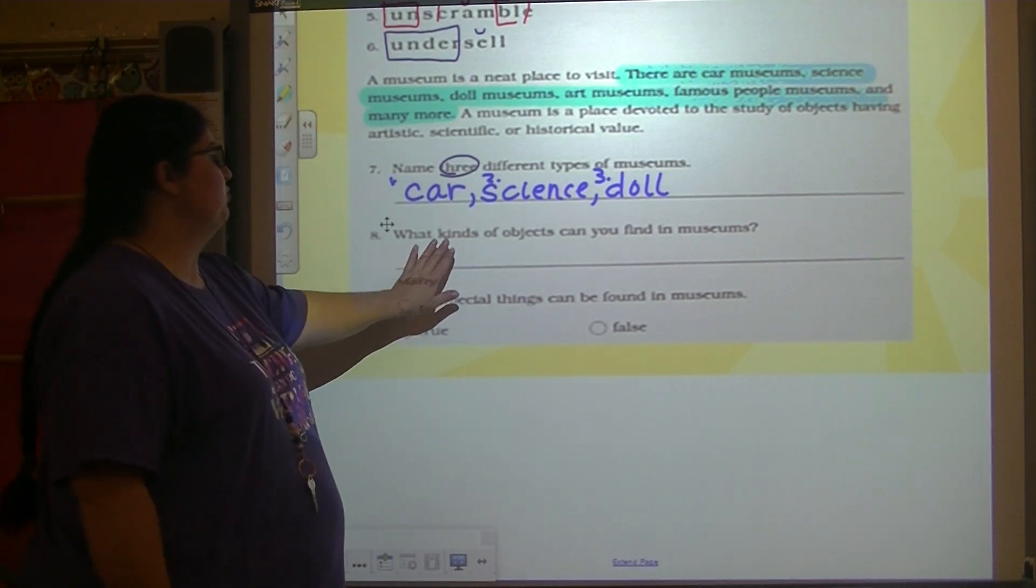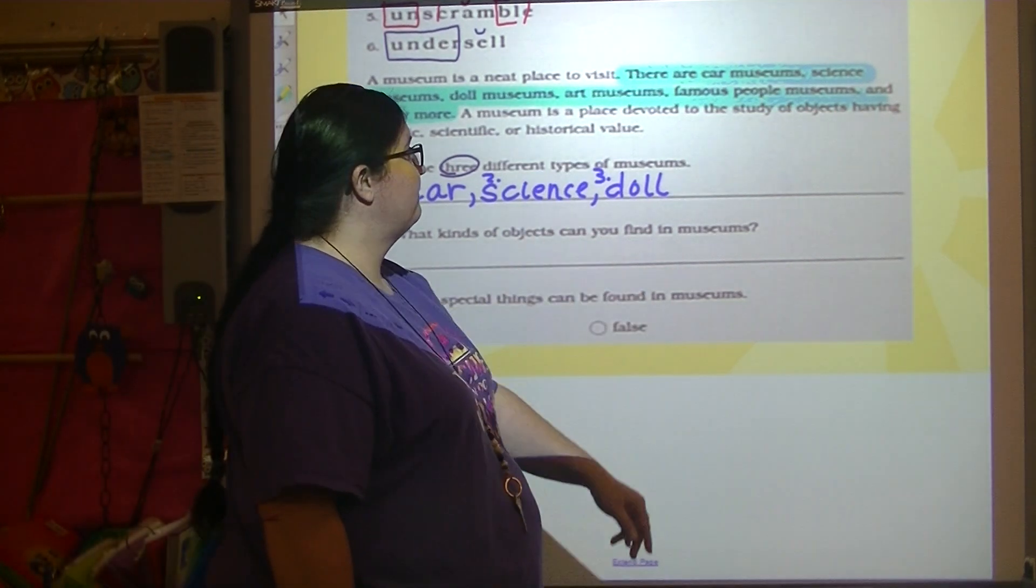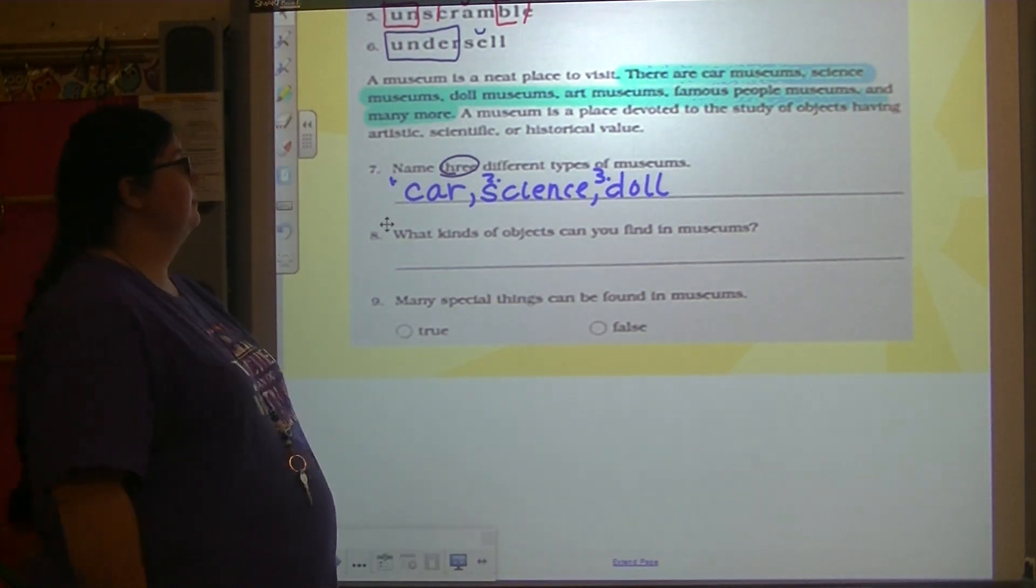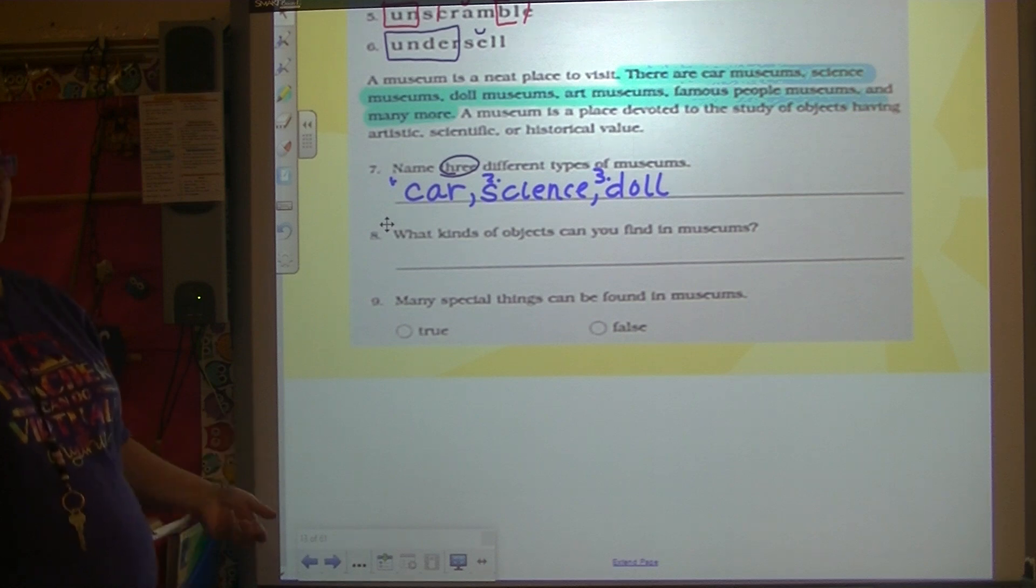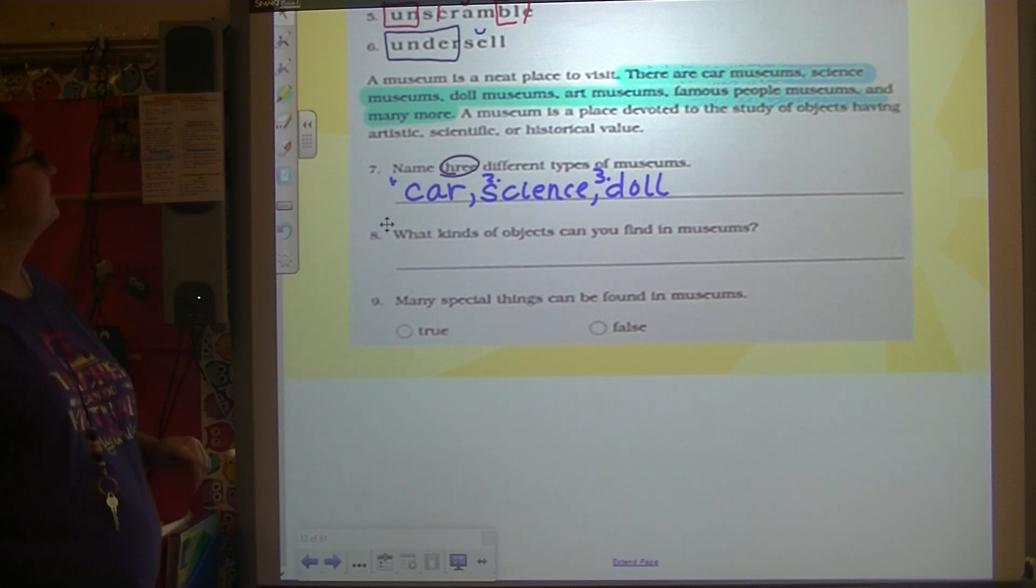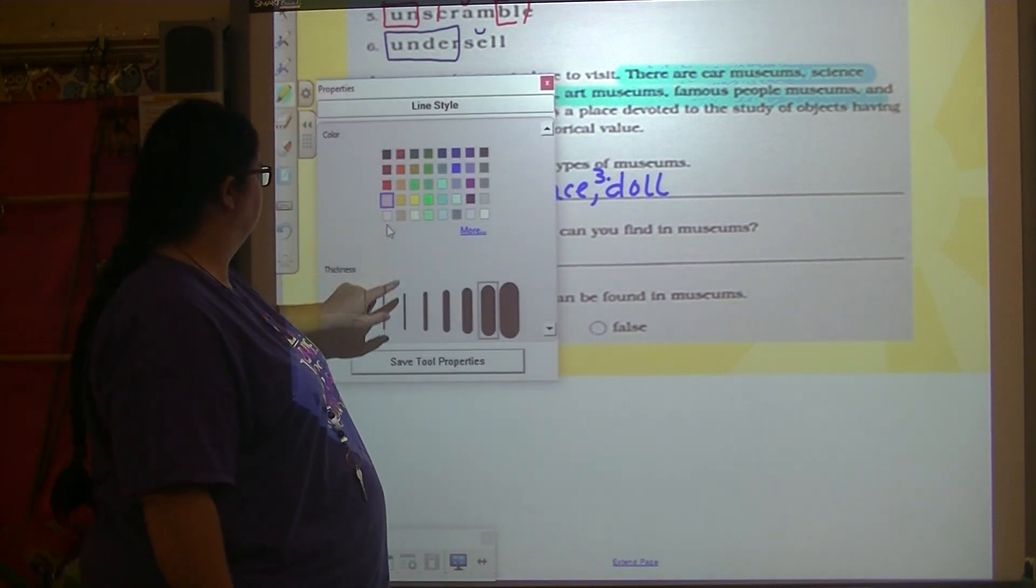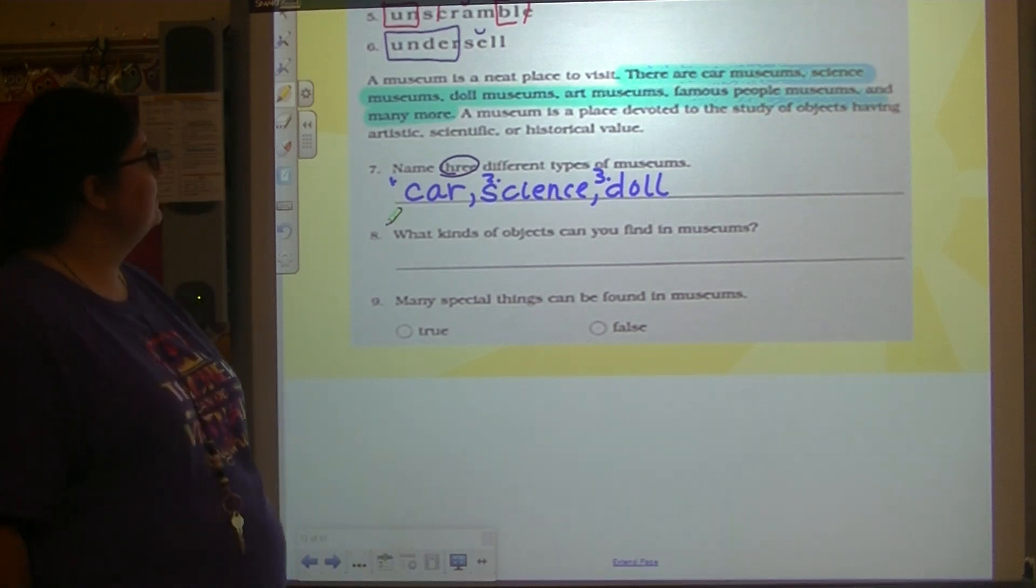Number eight says, what kinds of objects can you find in museums? What kinds of objects?